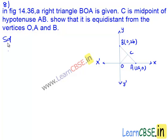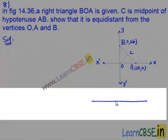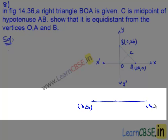Moving on to the solution. In this problem, a right angle triangle BOA is given. C is the midpoint of hypotenuse AB and we need to show that this point C is equidistant from the vertices O, A and B. First, let us find the coordinates of the point C. We know that the midpoint of the line segment joining the two points (x1, y1) and (x2, y2) is given by: x1 plus x2 divided by 2, comma, y1 plus y2 divided by 2.